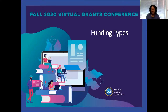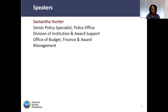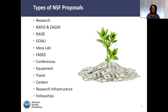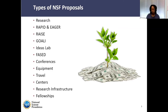Thank you, Caitlin. I'm Samantha Hunter from the Policy Office, and I'm going to cover the funding types at the National Science Foundation. We have all of the types of proposals listed here. All of these are described in the Proposal and Award Policies and Procedures Guide — the PAPPG. The PAPPG will specify all the different components that you need to include for each type of proposal. NSF's electronic systems perform a compliance check of your proposal based on required elements identified in the PAPPG. Keep in mind that you are only to include what we ask for in the PAPPG and nothing else — don't add extra components to your proposal that are not required.